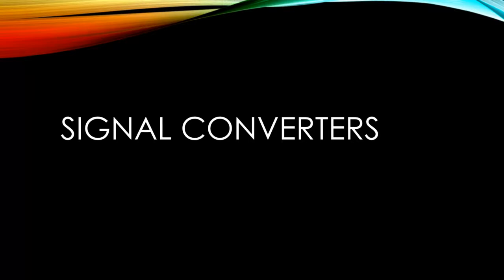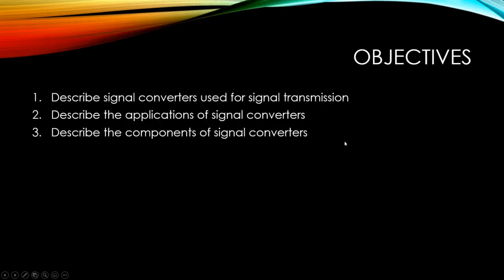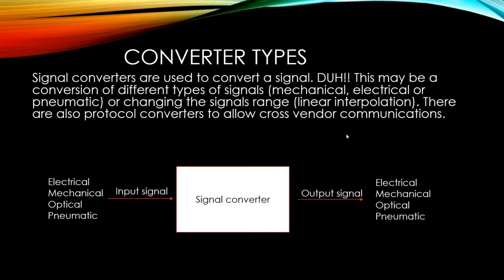Signal converters — it's not a long one, around 20 something slides. Where is this leading us? Signal converters. We talked about different types of signal converters, starting from primitive types — pneumatic ones, mechanical ones — and working our way up to analog-to-digital and digital-to-analog converters. Objectives: describe signal converters used in signal transmission systems, describe their applications, and describe their components.